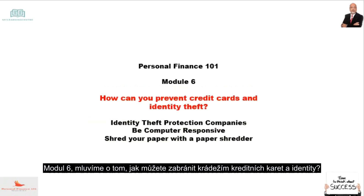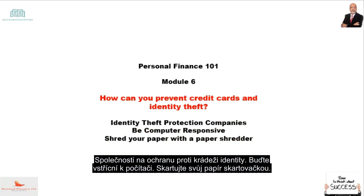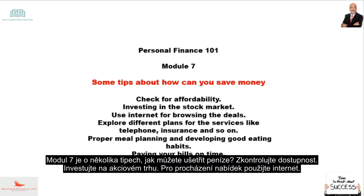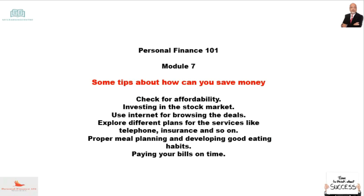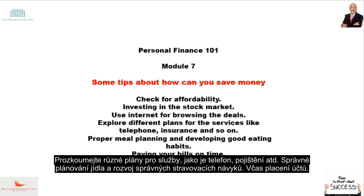In Module 6, we talk about how you can prevent credit card fraud and identity theft — including identity theft protection companies, being computer-aware, and shredding your paper with a paper shredder. Module 7 covers tips on how to save money: checking for affordability, investing in the stock market, using the internet for browsing deals, exploring different plans for services like telephone and insurance, proper meal planning and developing good eating habits, and paying your bills on time.